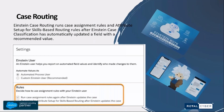Based on the cases coming from a particular client, Einstein Case Classification will automatically populate many fields for the agent. Once you have that in place, you can make things even more streamlined and efficient by using case routing.